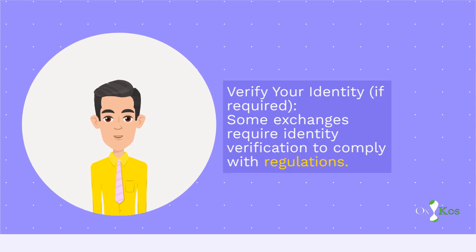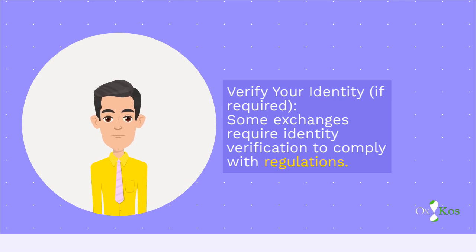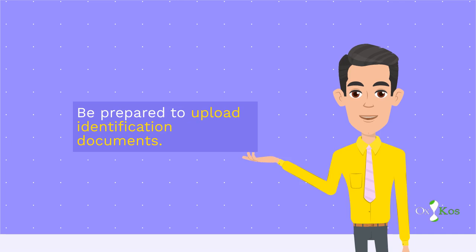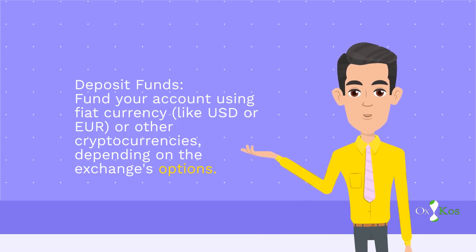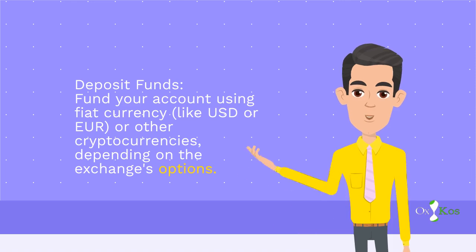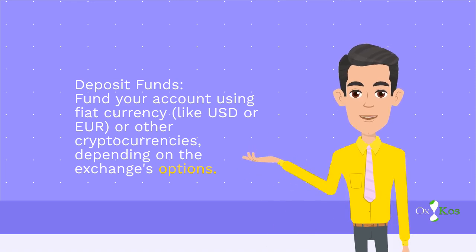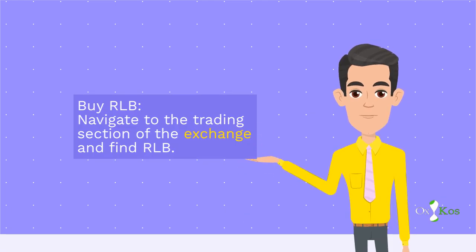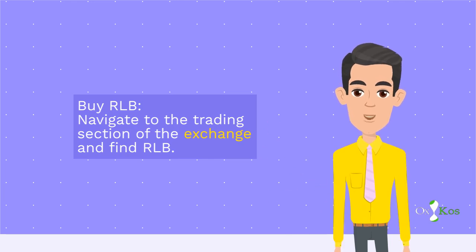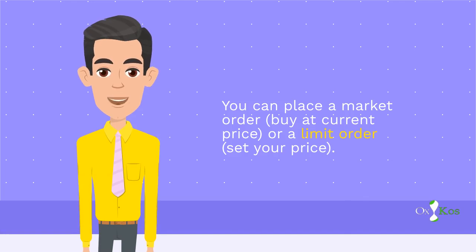Verify your identity if required — be prepared to upload identification documents. Deposit Funds: fund your account using fiat currency, like USD or EUR, or other cryptocurrencies, depending on the exchange's options. Buy RLB: navigate to the trading section of the exchange and find RLB. You can place a market order, buying at the current price, or a limit order, setting your own price.